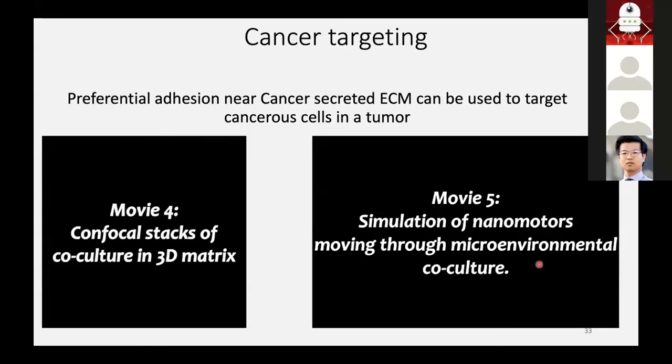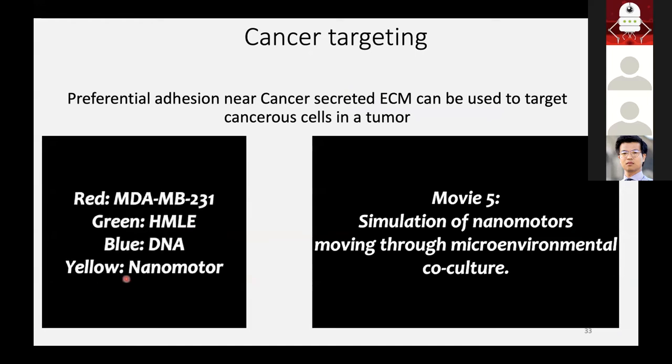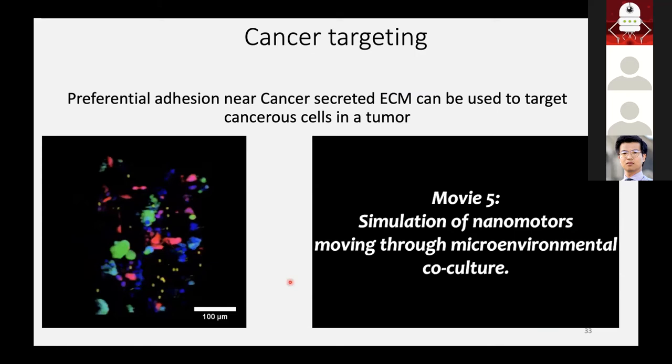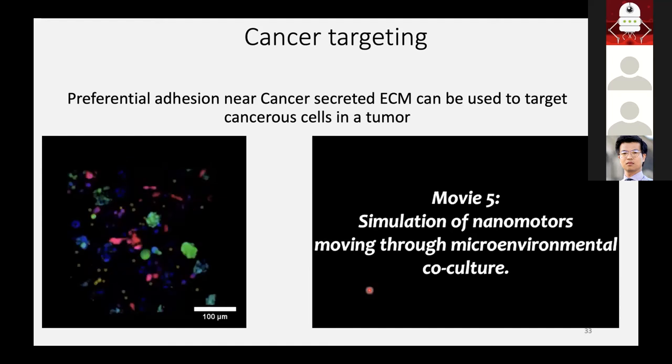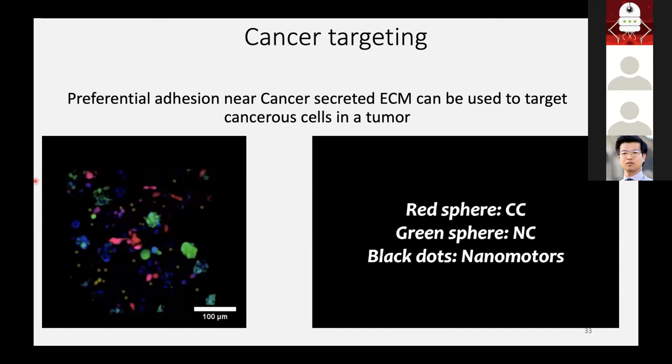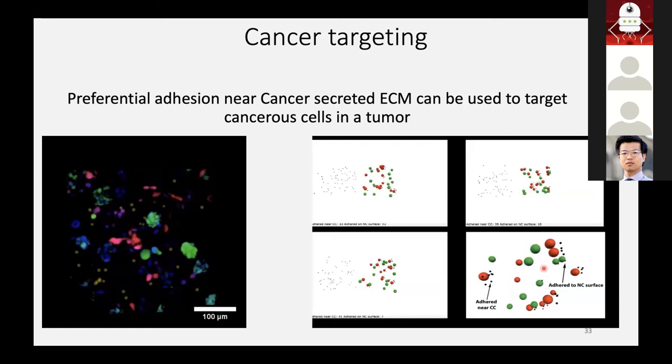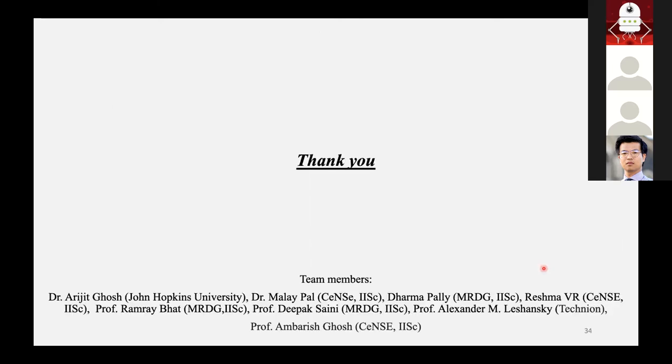There is the potential for using this observation in cancer targeting. As you can see in the movies over here, we have a confocal stack and the nanomotors are yellow ones. They come together near the cancer cells or leave the normal cells alone. We simulated this and we found that our measurement of our nanorobots were quite similar to what we simulated. You can see that preferential adhesion near the cancer cell can be exploited to visualize and target cancer. With this, I would like to conclude my talk. I'd like to thank all the listeners and these are the team members who helped with this work. Thank you.